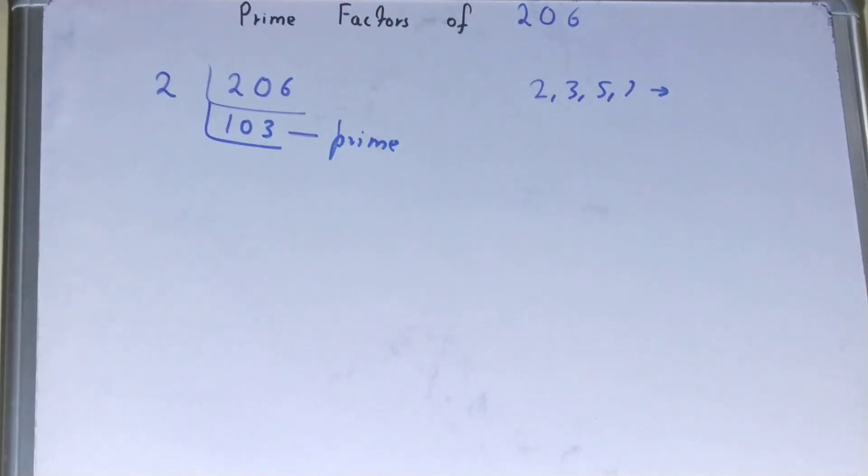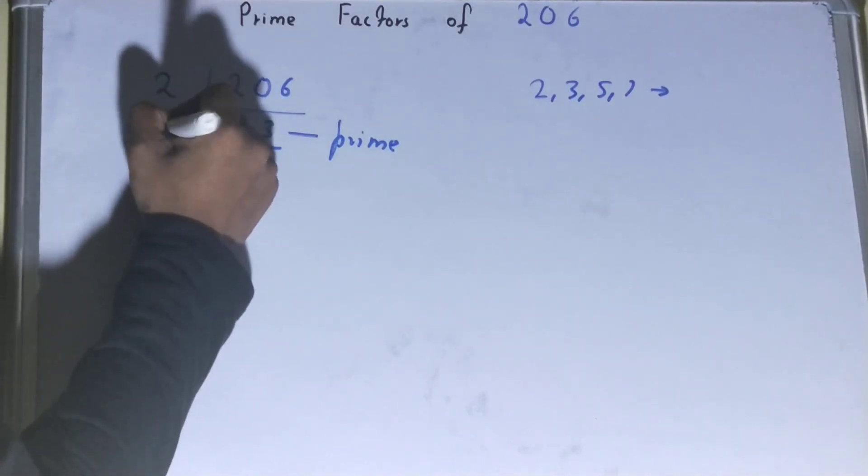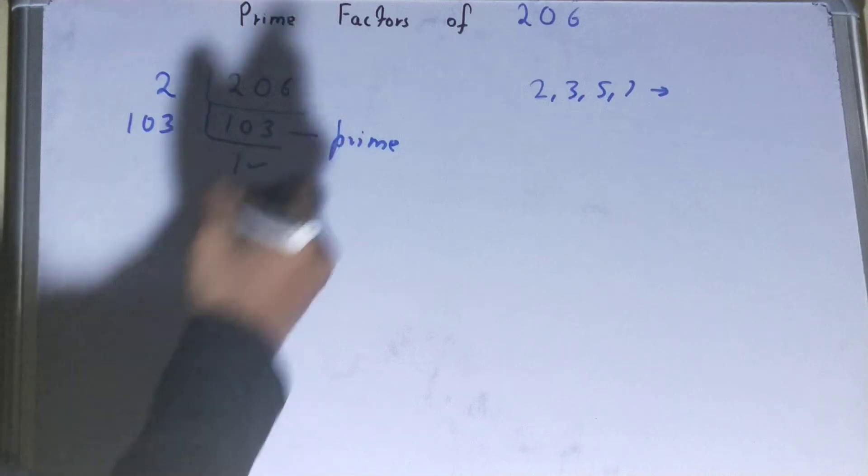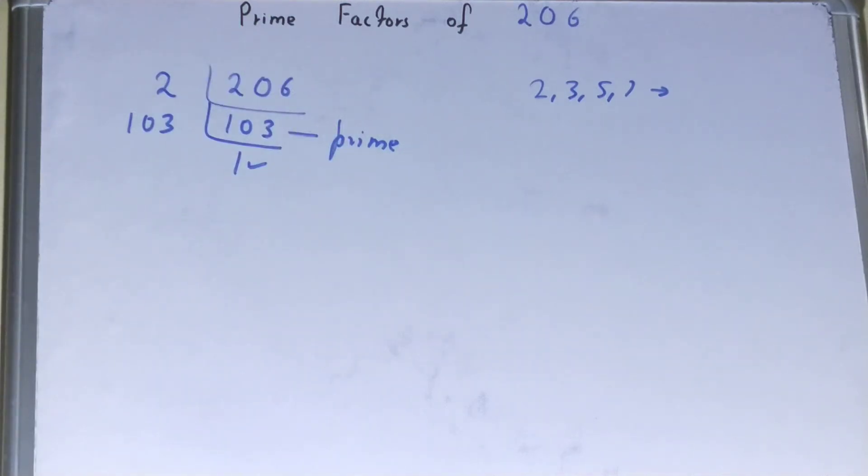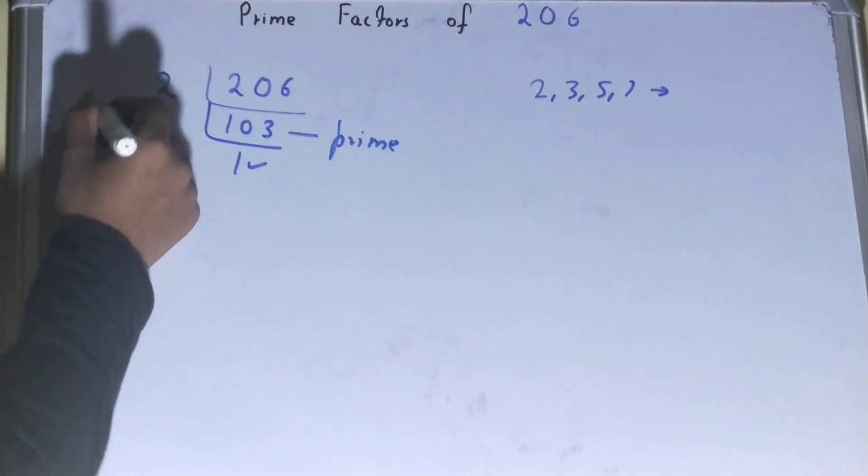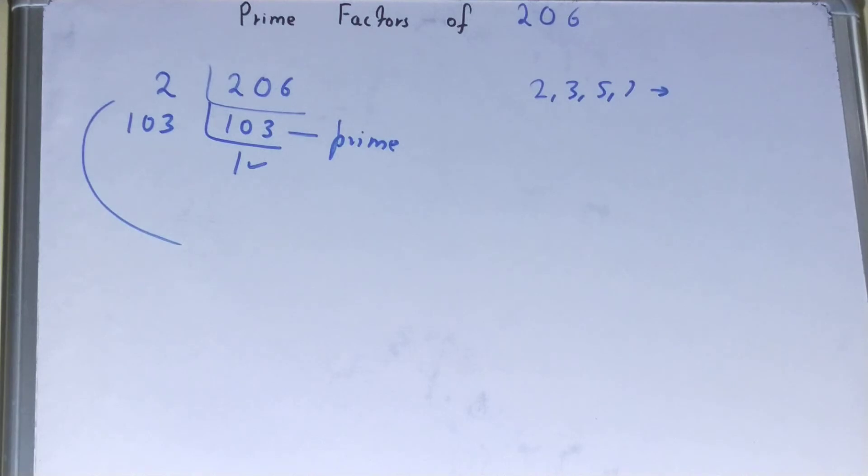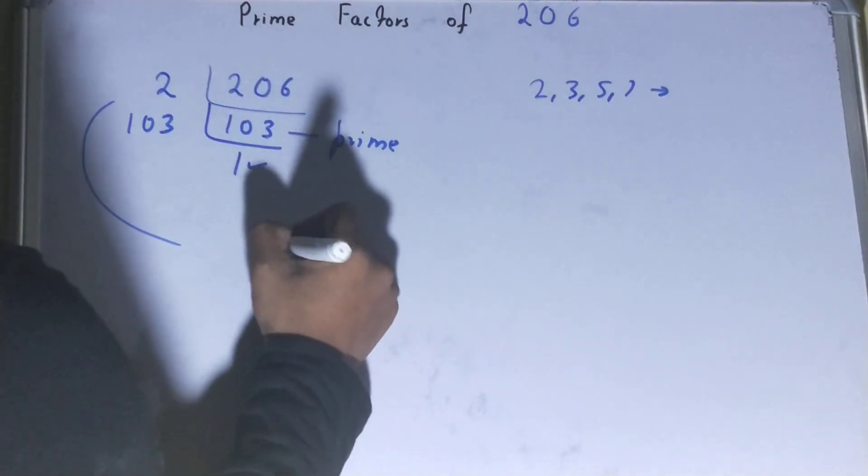And that's why to divide this 103, you need 103 on the left-hand side also. And once you'll do so, you'll be left with one. Once you're left with one, the work is done, and whatever you have on the left-hand side will be the set of prime factors for the number 206.